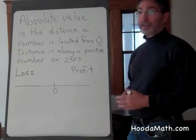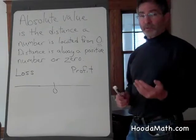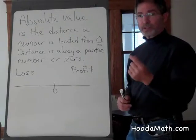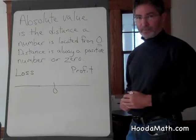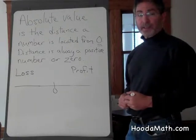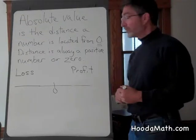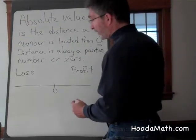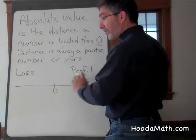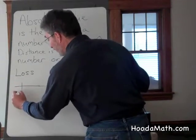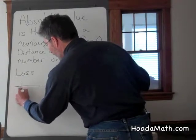For example, the absolute value of zero is zero because there is no distance between zero and itself. If I had a company and I lost $2,000 during the month, a loss for negative $2,000 would be how much money was lost.